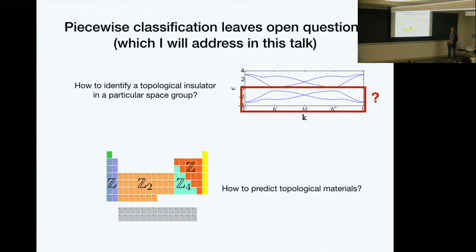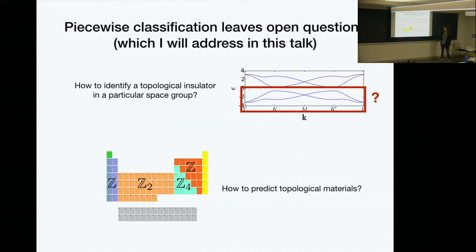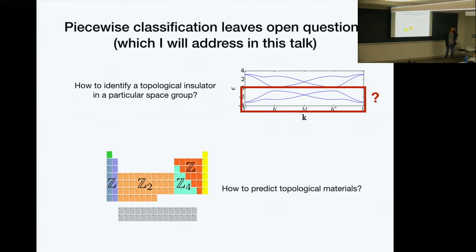The questions I want to address in this talk are: first, this is the main part — if you give me some band structure and say here's some group of valence bands, how do I know if those bands are topological? How can I identify them in a particular space group? And then the second question, which I'll briefly touch on, is how can we use this information to predict materials? All of these phases are classified by some abstract Z, Z2, or Z4 index, but the periodic table isn't labeled this way, so finding materials with these indices is a challenging and interesting problem.